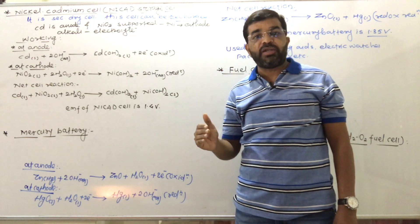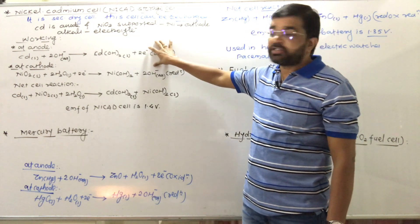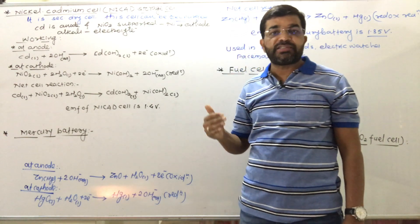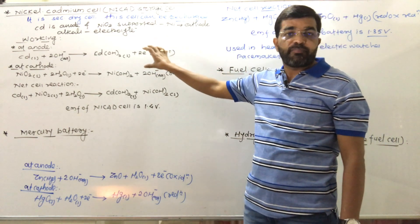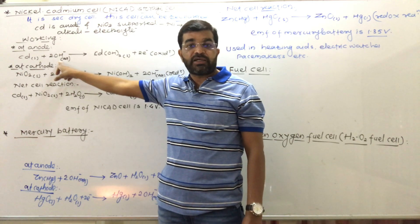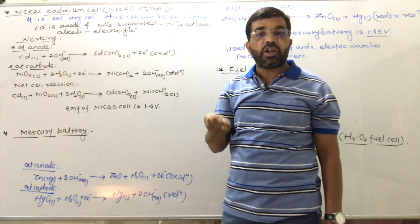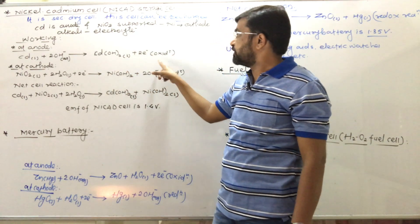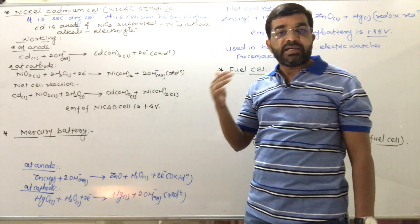Now we study the working of the nickel-cadmium cell — the reactions taking place at the anode and cathode, the net cell reaction, the EMF, and the applications. At the anode, cadmium reacts with the hydroxyl ions of the alkali electrolyte. It undergoes oxidation, first forming Cd²⁺ ions with the loss of two electrons, which then combine with hydroxyl ions to produce cadmium hydroxide. This is the anodic oxidation reaction.